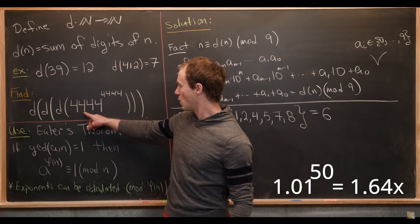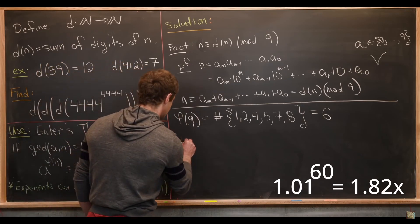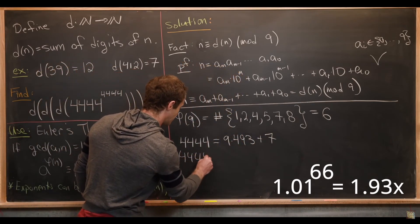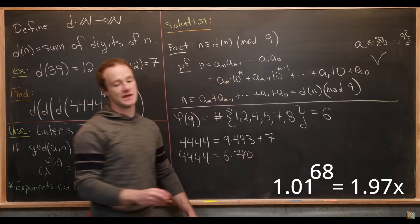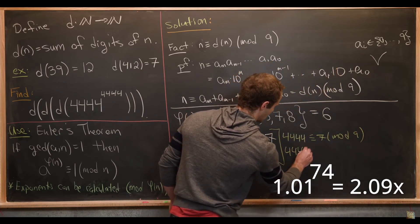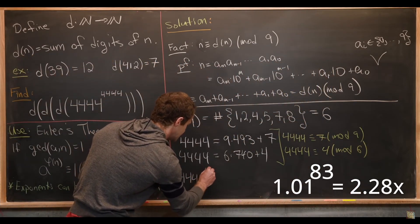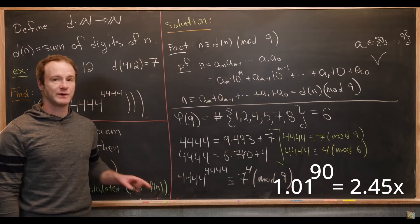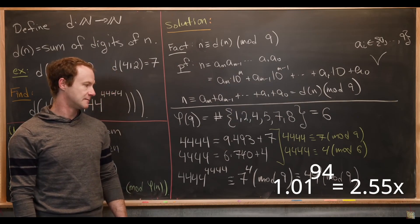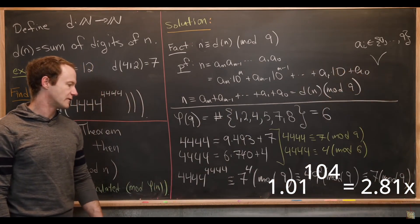We perform division with remainder: 4,444 equals 9 times 493 plus 7, and 4,444 equals 6 times 740 plus 4. So 4,444 is congruent to 7 mod 9, and 4,444 is congruent to 4 mod phi(9), which is 6. Using Euler's theorem and properties of congruences, 4,444 to the 4,444 is congruent to 7 to the 4th mod 9. That equals 49 squared mod 9. Since 49 is congruent to 4 mod 9, we get 4 squared equals 16, which is congruent to 7 mod 9. So 4,444 to the 4,444 is congruent to 7 mod 9.